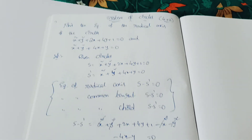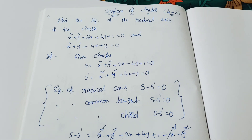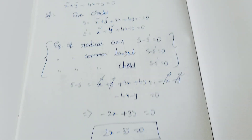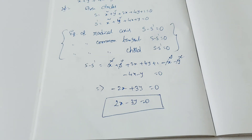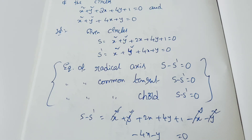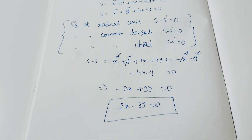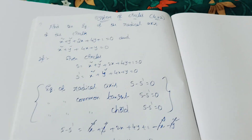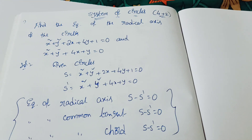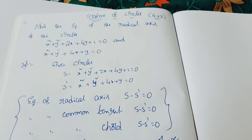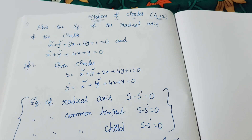So 2x minus 3y = 0 is the radical axis. If it had asked for the common chord or the common tangent, the answer would be the same — this formula applies to all three cases. It's a simple formula, clear? Now let's move to the next question.